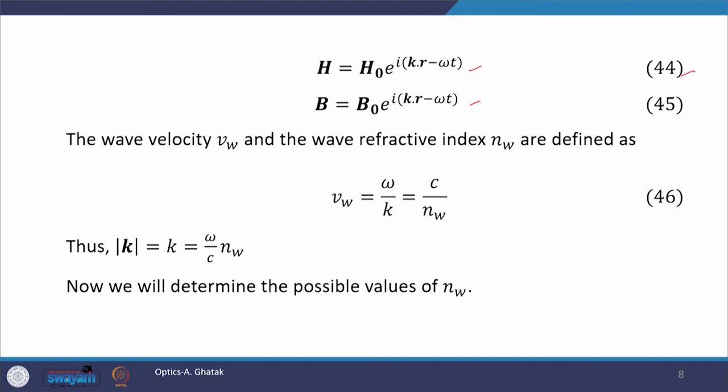Similarly, the expressions for h and b fields are given by equations 44 and 45. We know that the wave velocity and wave refractive index are defined by the relation: vw equals omega by k, which again equals c by nw. The wave vector k equals omega by c times n, and its modulus is k equals omega by c times nw.